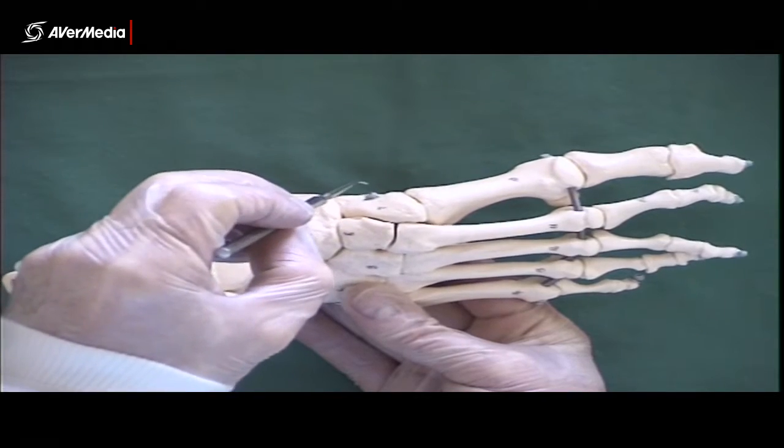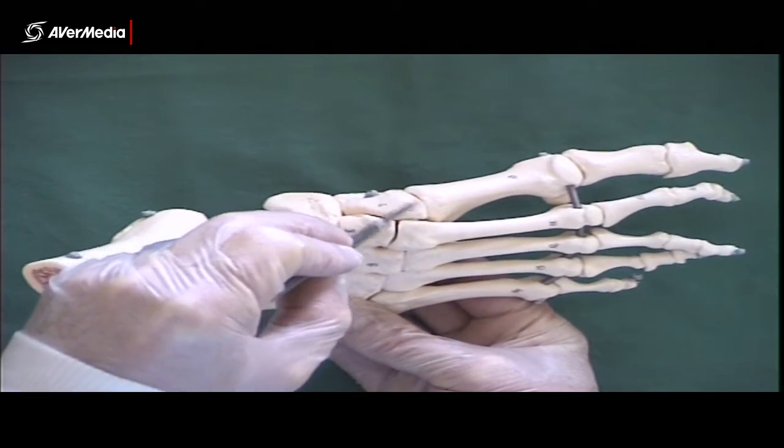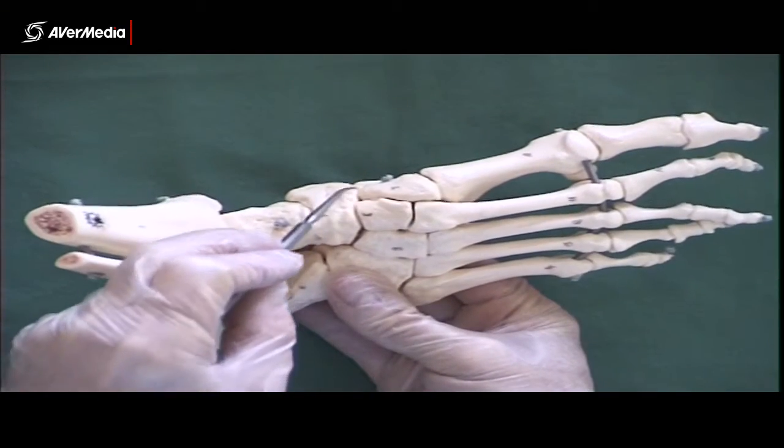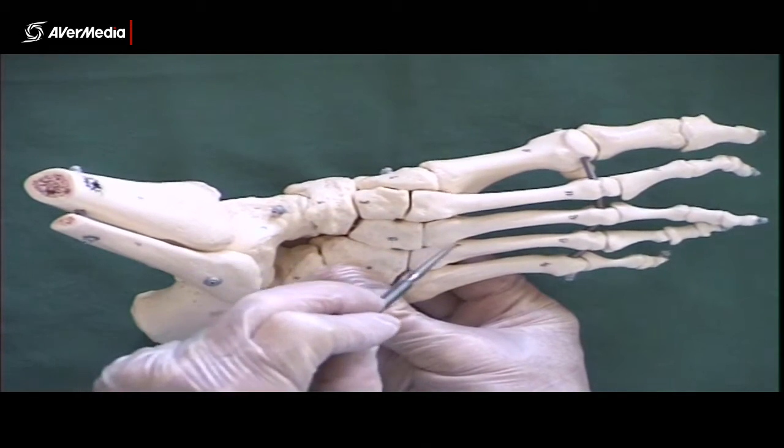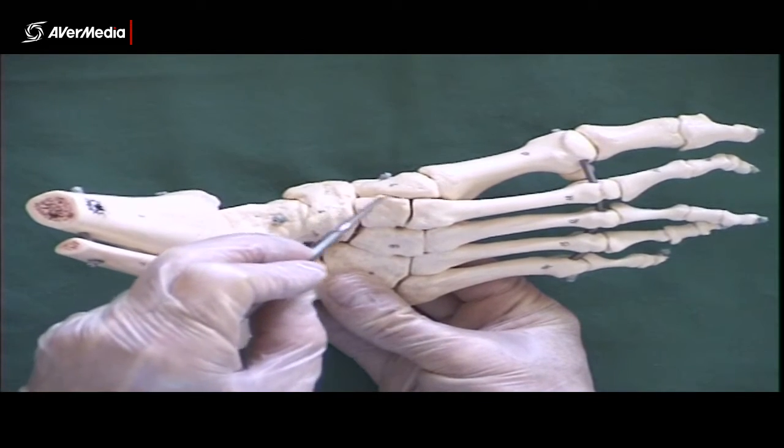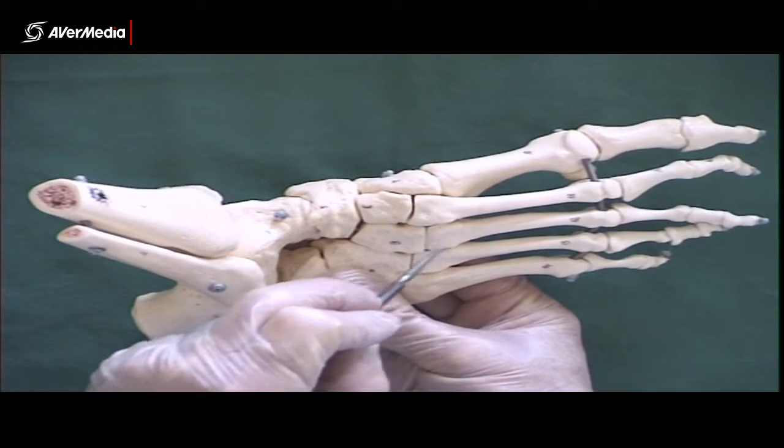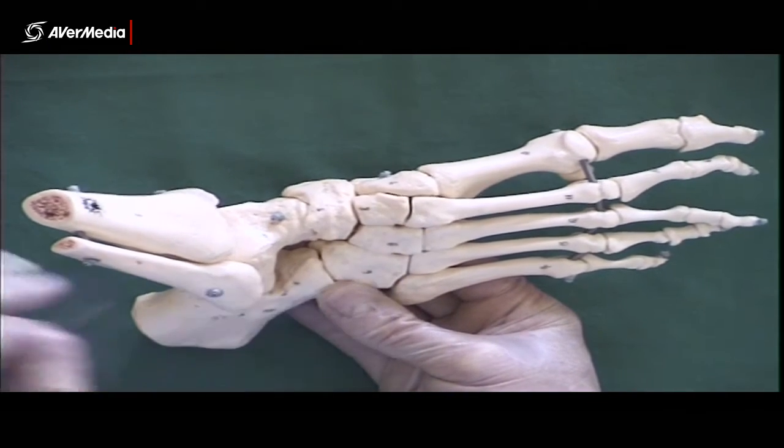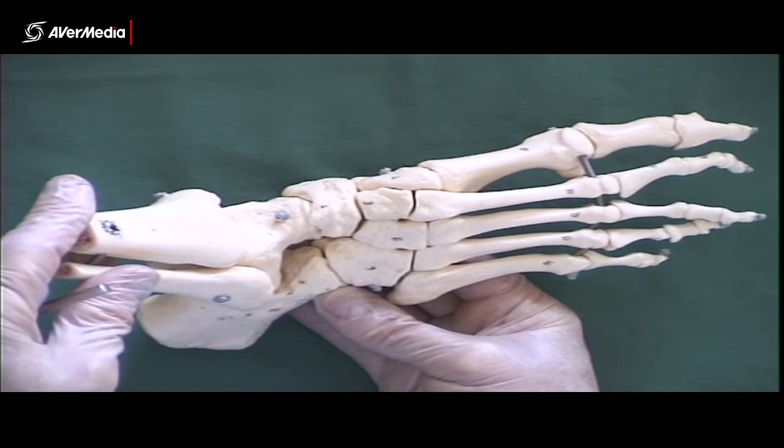We'd have a medial tarsometatarsal here, a lateral tarsometatarsal here, and of course if there was just blu-tac all over the place through here, that would be the great tarsal joint, which covers a lot of territory around the cuneiforms, cuboid, navicular, and two of the metatarsals as well.